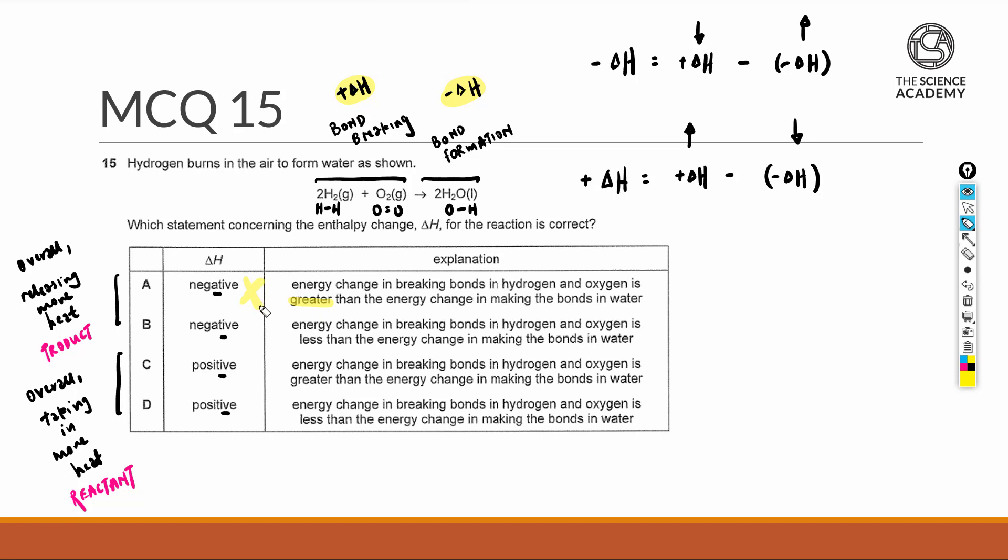If we take B, energy change in breaking bonds in hydrogen and oxygen is less than the energy change in making the bonds in water. Now this seems to be legitimate.